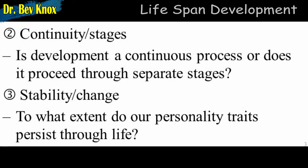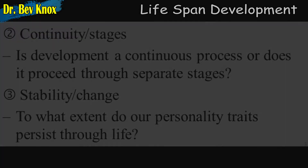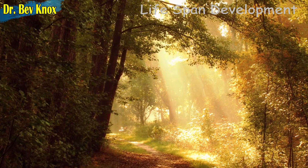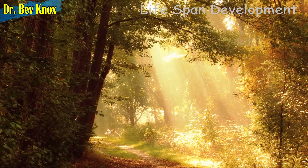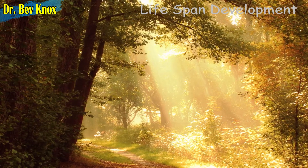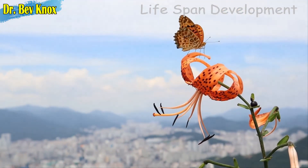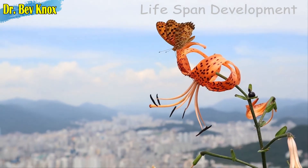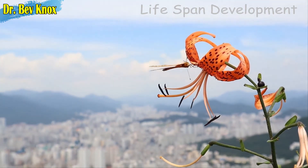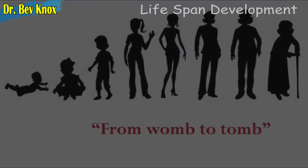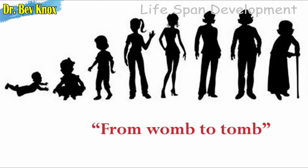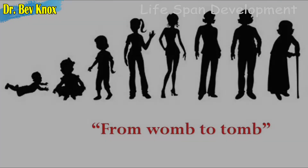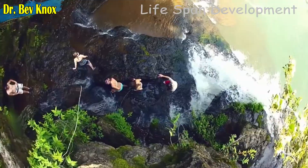The third issue is stability and change — which of our traits persist through life and how do we change as we age. Do adults differ from infants as a giant redwood differs from its seedling, a difference created by gradual growth? Or do they differ as a butterfly differs from a caterpillar, a difference of distinct stages? Researchers who emphasize experience and learning typically see development as a slow continuous shaping process.